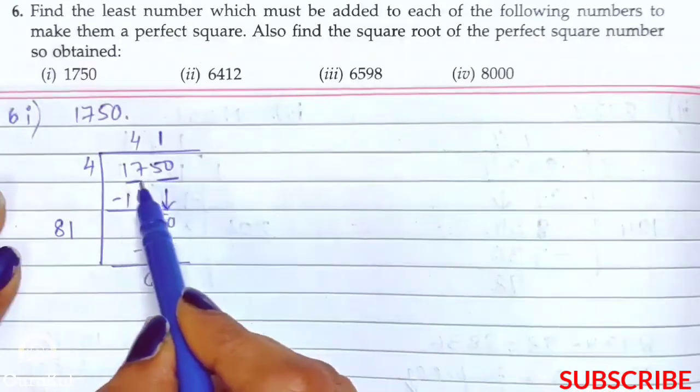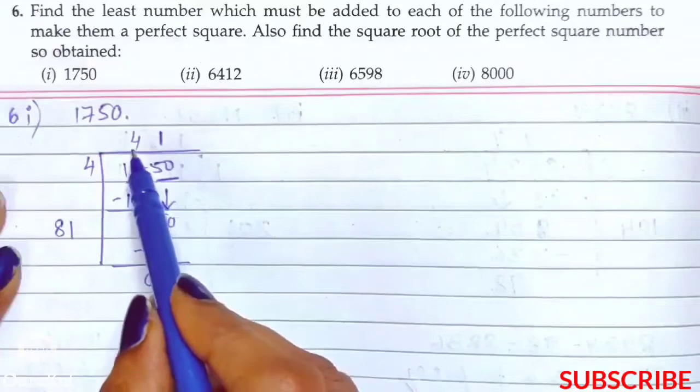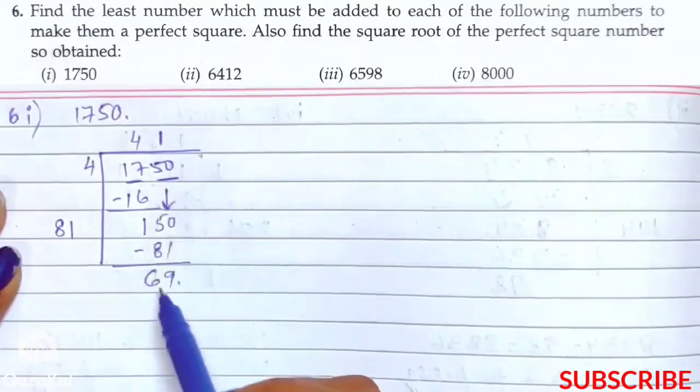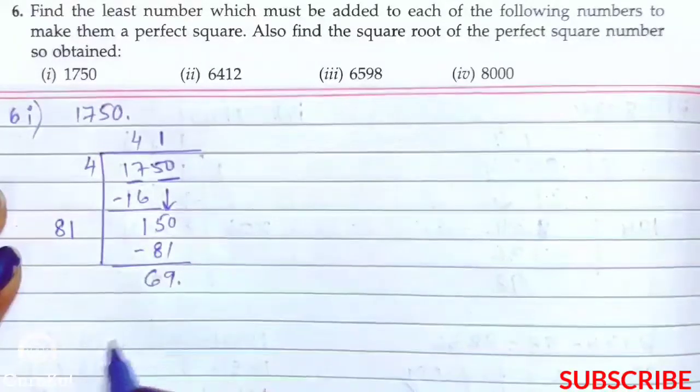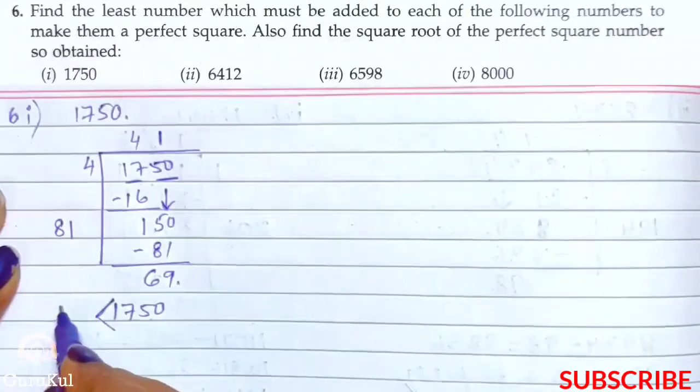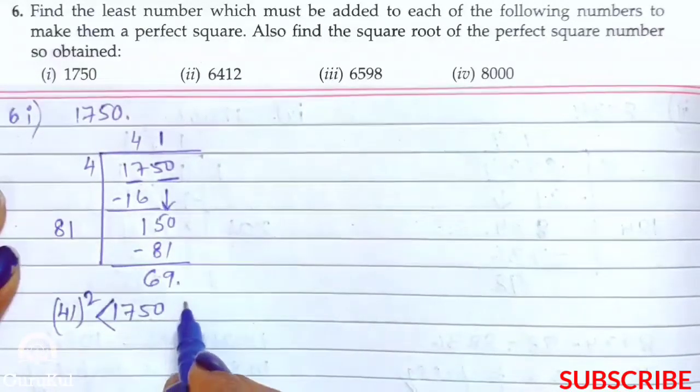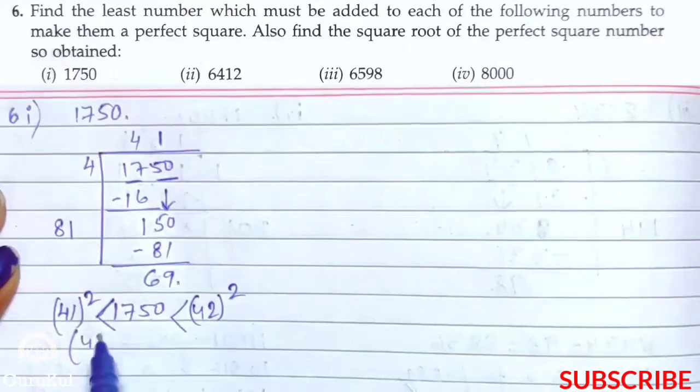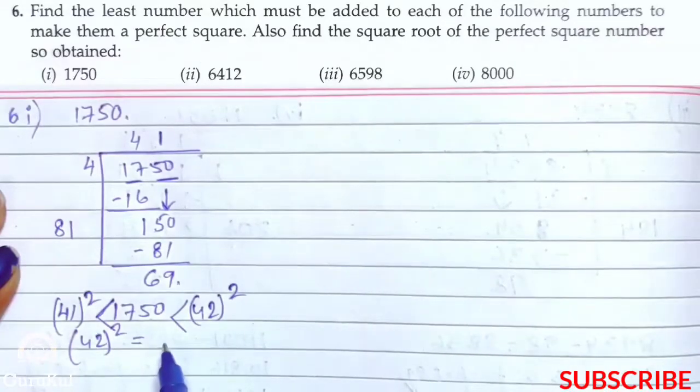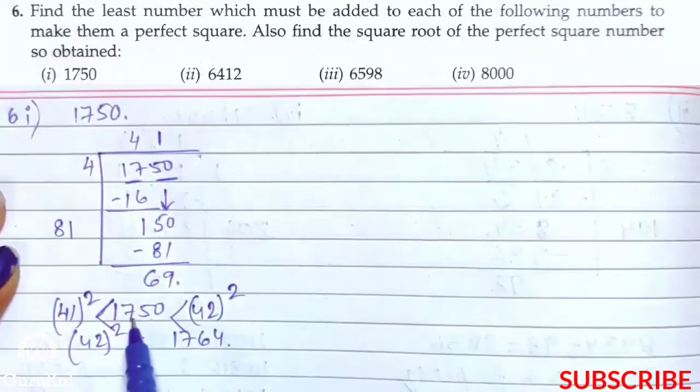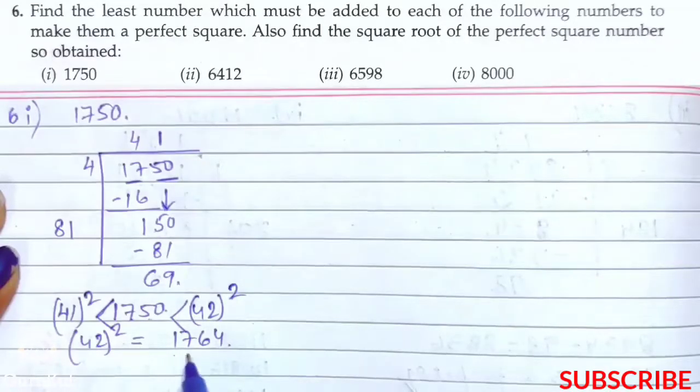So ab dekhye 1750 is not a perfect square. 41 into 41 agar karte hai, so woh 1750 nahi ho ga, we are getting a remainder. So how do we write that? 1750 is more than 41 square but it is less than 42 square. So 42 square karne se humara answer kya aata hai?